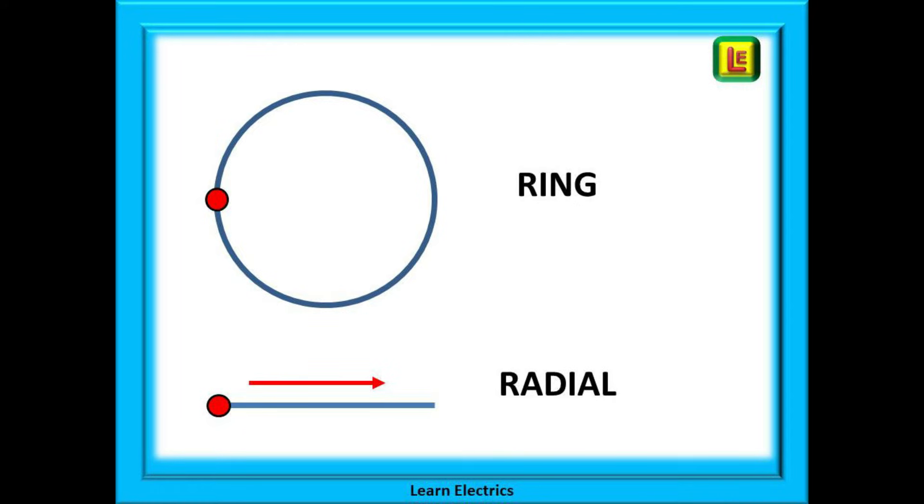With a radial circuit the cables leave the consumer unit, go to the points of use and stop. The cables do not return.